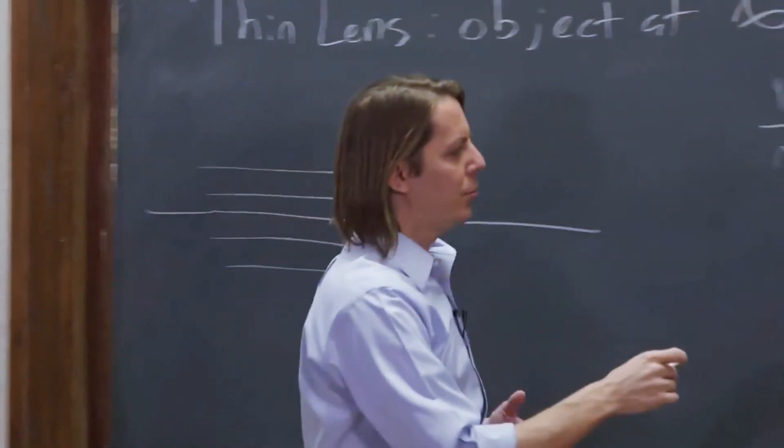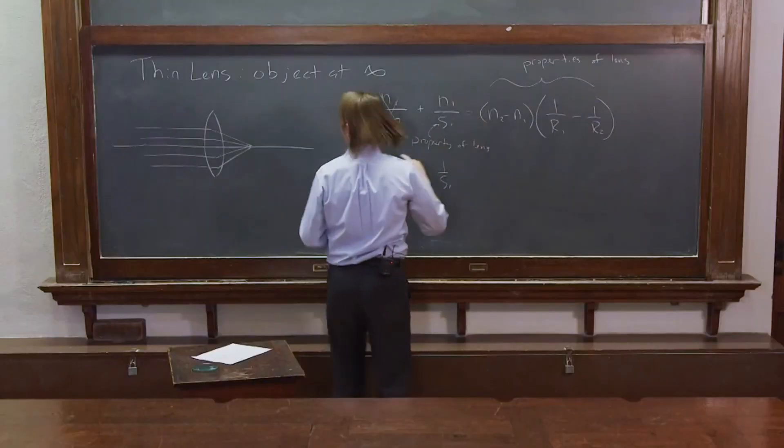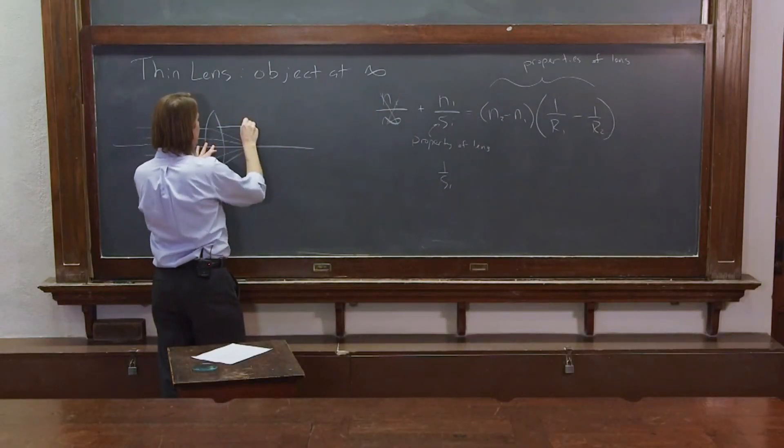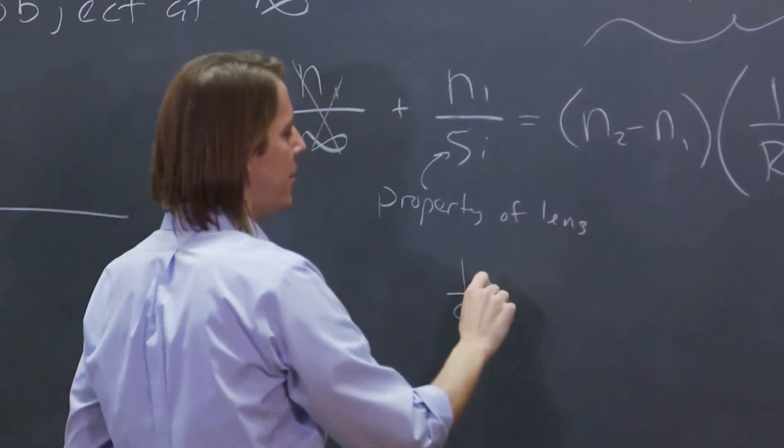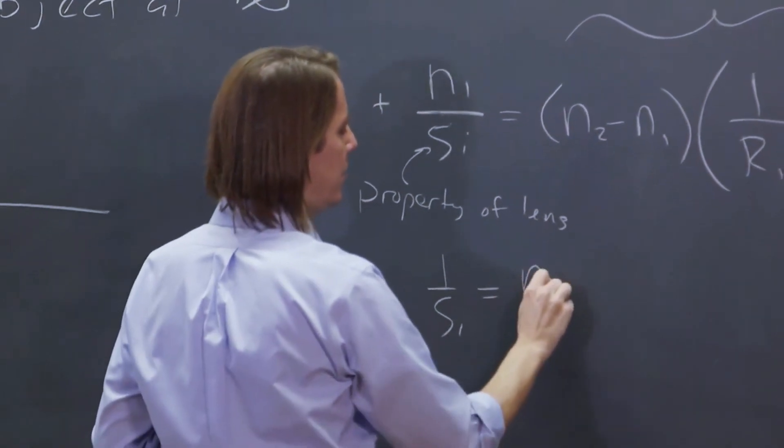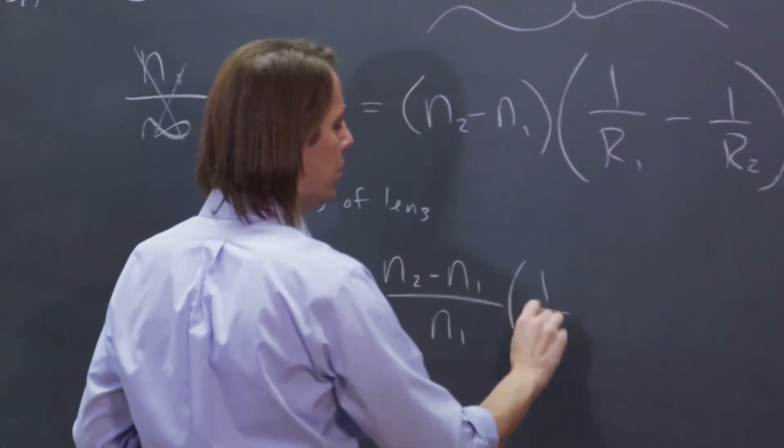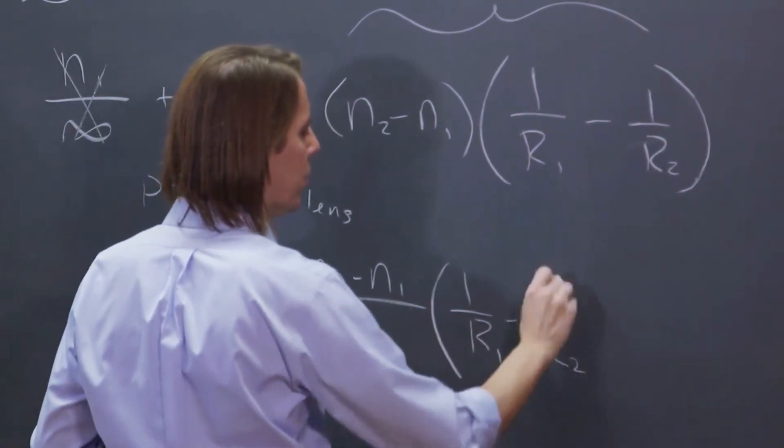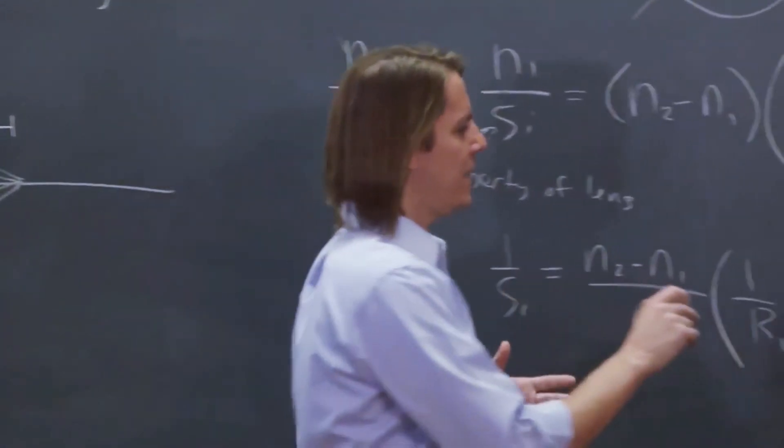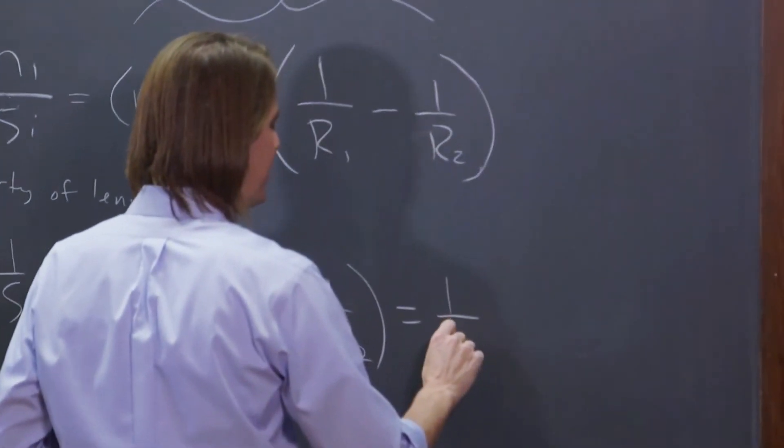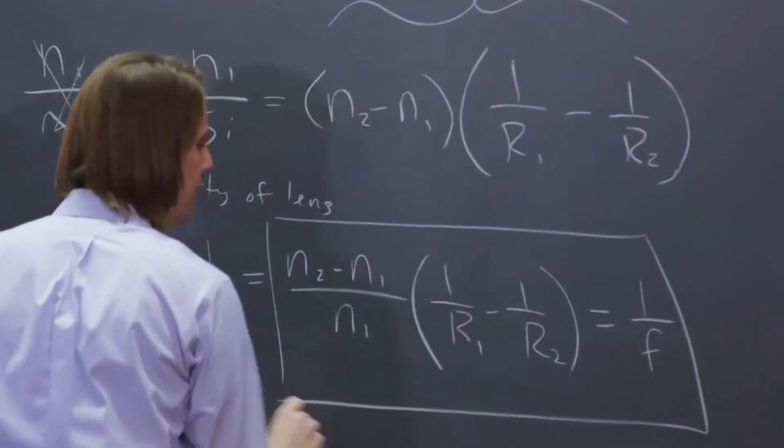So if we now turn it around a little bit, we get that 1 over s_i, the image distance—the position where it focuses parallel light. I'm going to pull this n1 under here, and it must be equal to (n2 minus n1) over n1 times (1 over r1 minus 1 over r2). This is called the lens maker's equation. We don't really call it the object distance anymore. We call it the focal length.